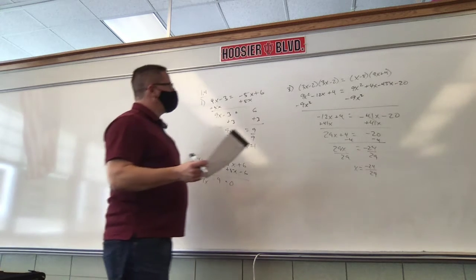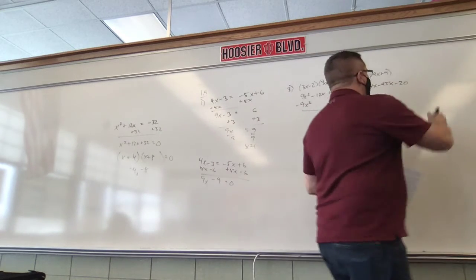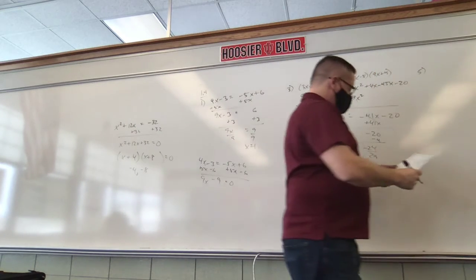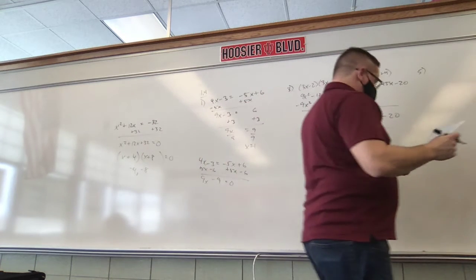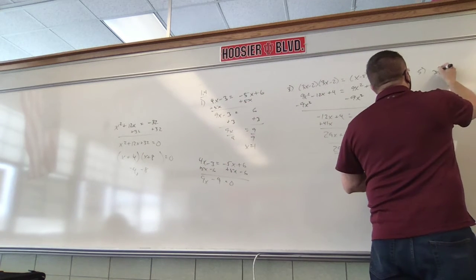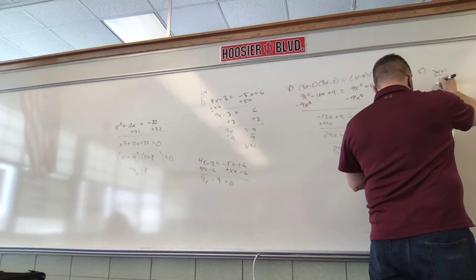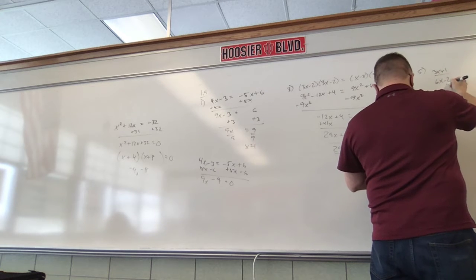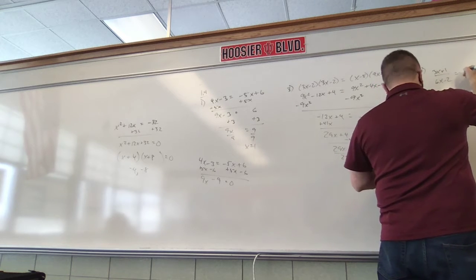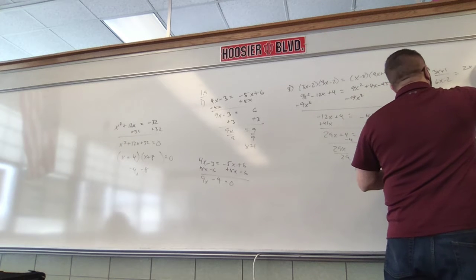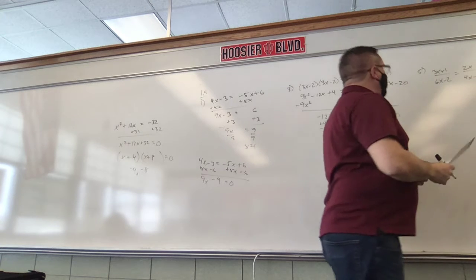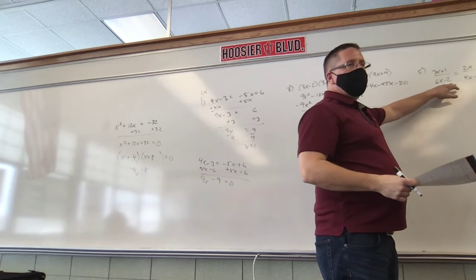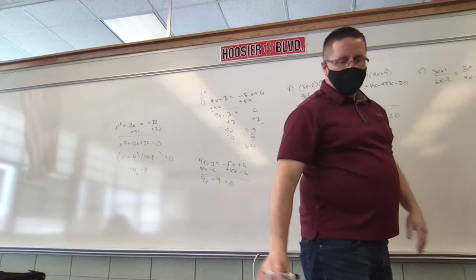Question number 5. We have 3x plus 1 over 6x minus 2. Now, one thing you might be thinking based on the last worksheet — I could have factored out 2 from the denominator. I could have done that.